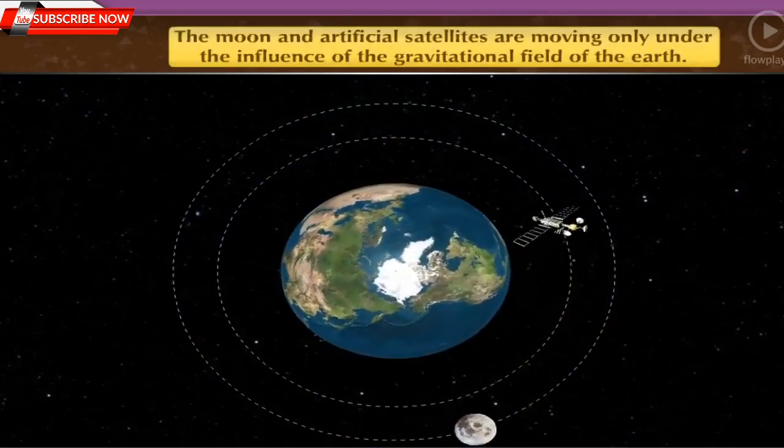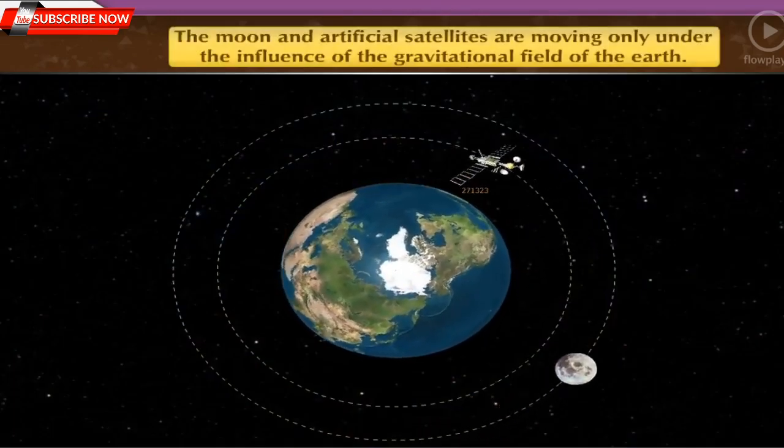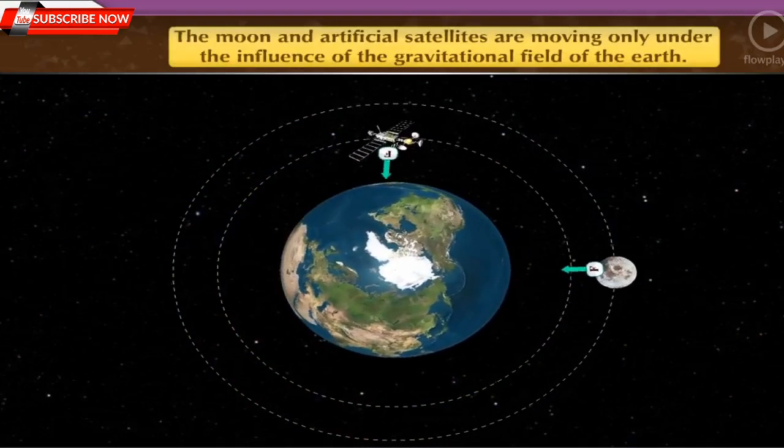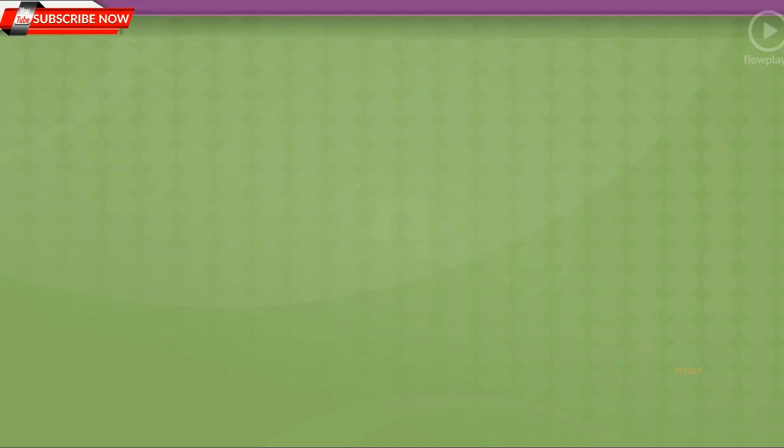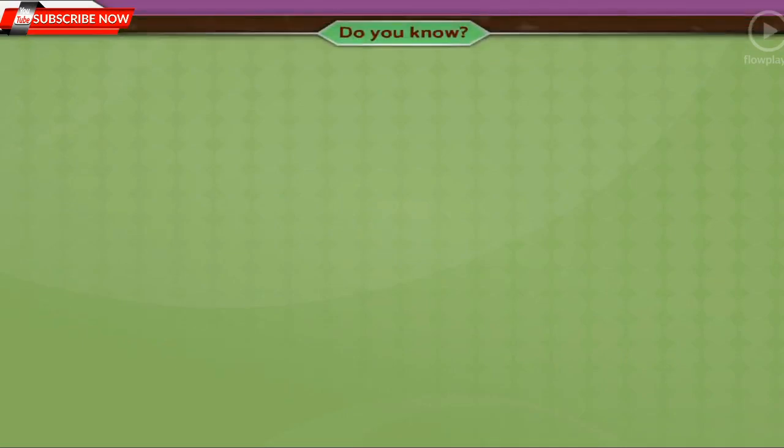The moon and artificial satellites are moving only under the influence of the gravitational field of the earth. Thus, they are in free fall. Do you know?